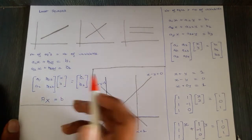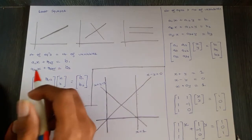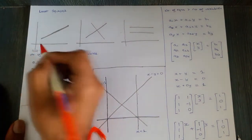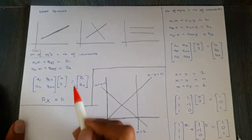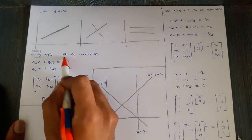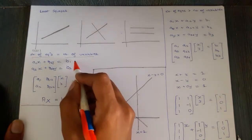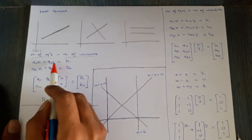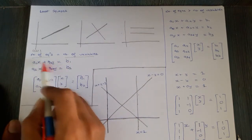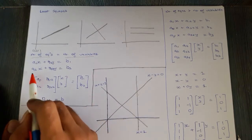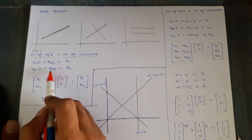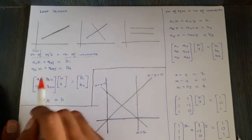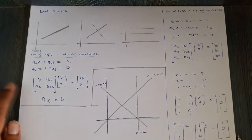Suppose you have some linear equations. Case 1: the number of equations equals the number of variables. We have two linear equations: a11·x + a12·y = b1 and a21·x + a22·y = b2, where x and y are the variables.